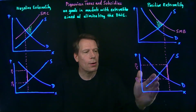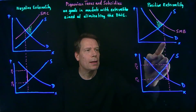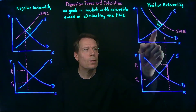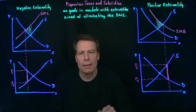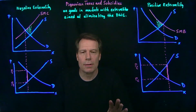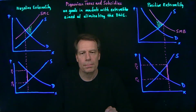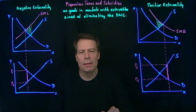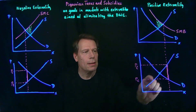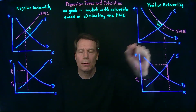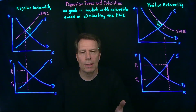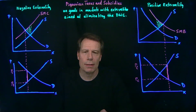And by causing the market to produce this quantity, we're causing the market to go ahead and pick up that additional surplus that it was leaving on the table when it simply produced where demand was equal to supply. That's called the Pigouvian subsidy — a subsidy that's put in place in the market in order to cause the market to produce more and eliminate the deadweight loss from a positive externality.